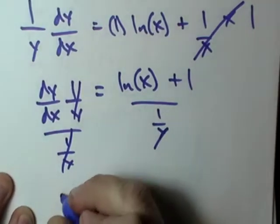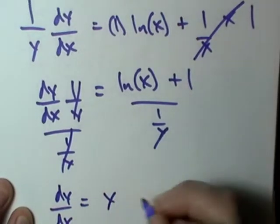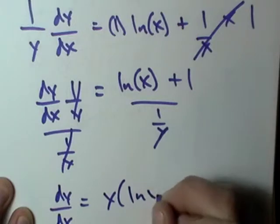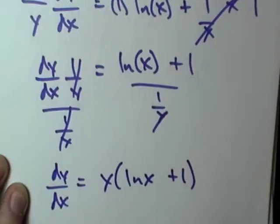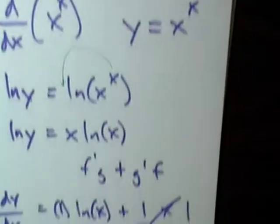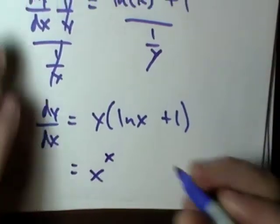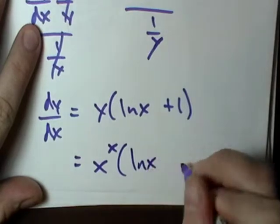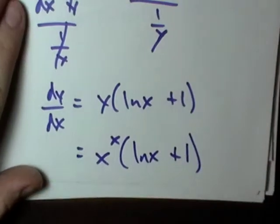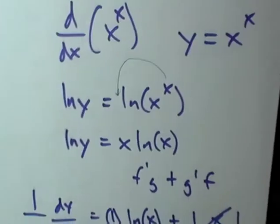That gives us dy/dx equals y times (ln x plus one). And if we remember back at the beginning, y was equal to x to the x. So we can say the derivative is x to the x times (ln x plus one). That is the derivative, using implicit differentiation and logarithmic differentiation.